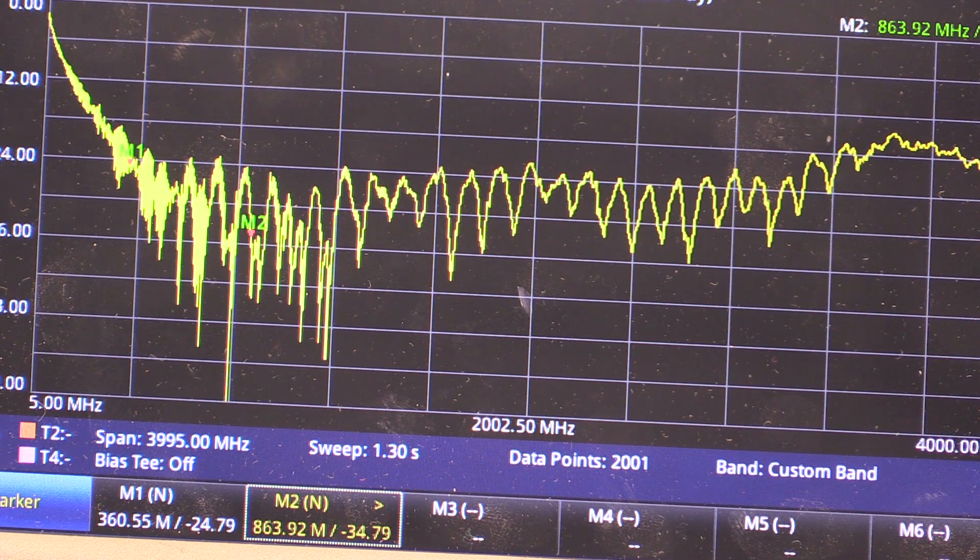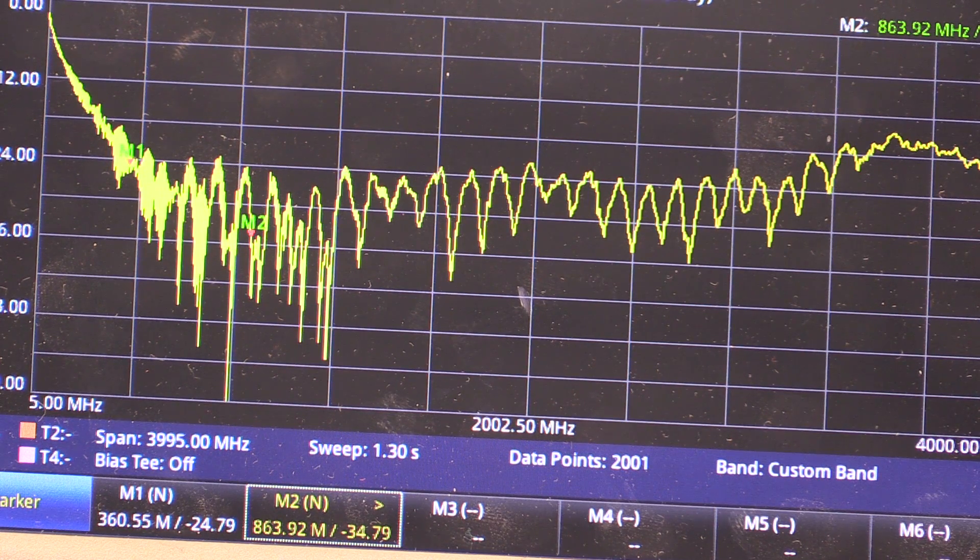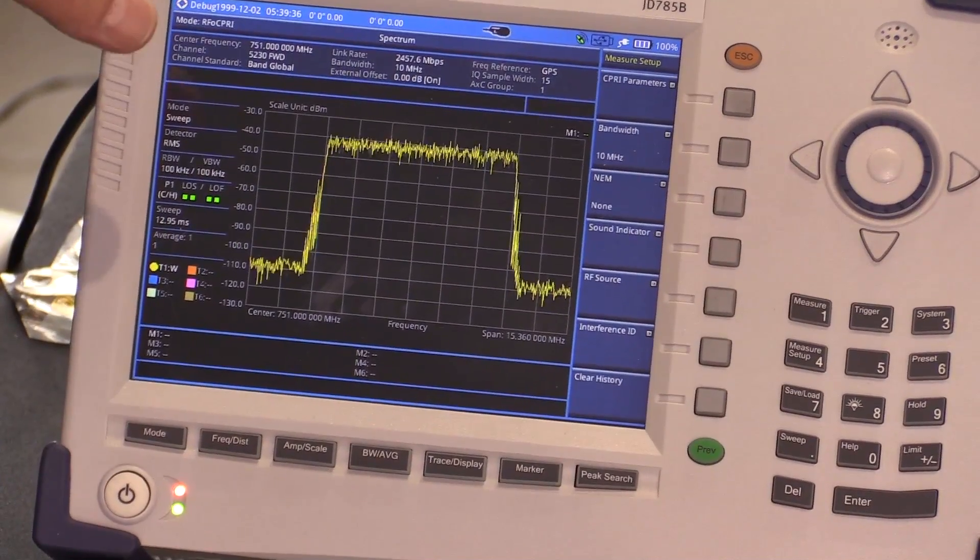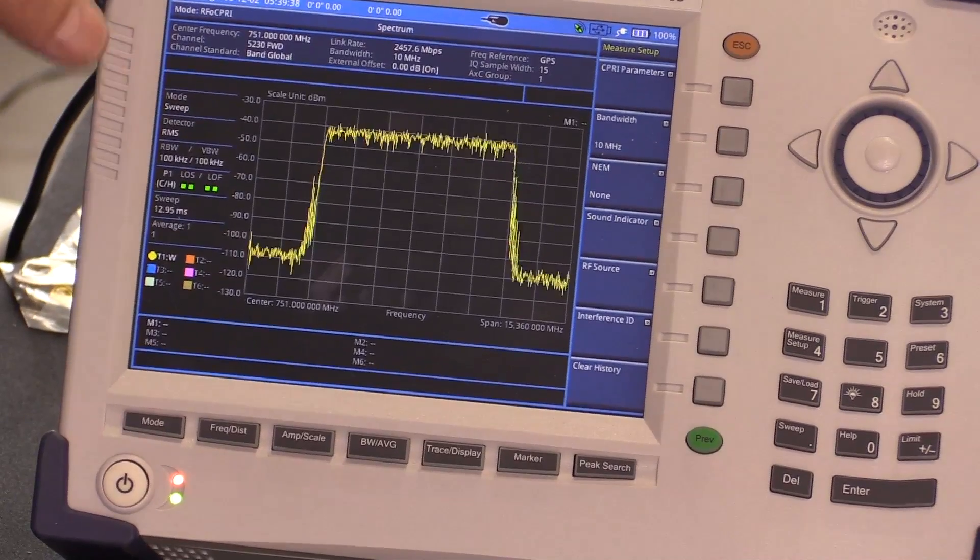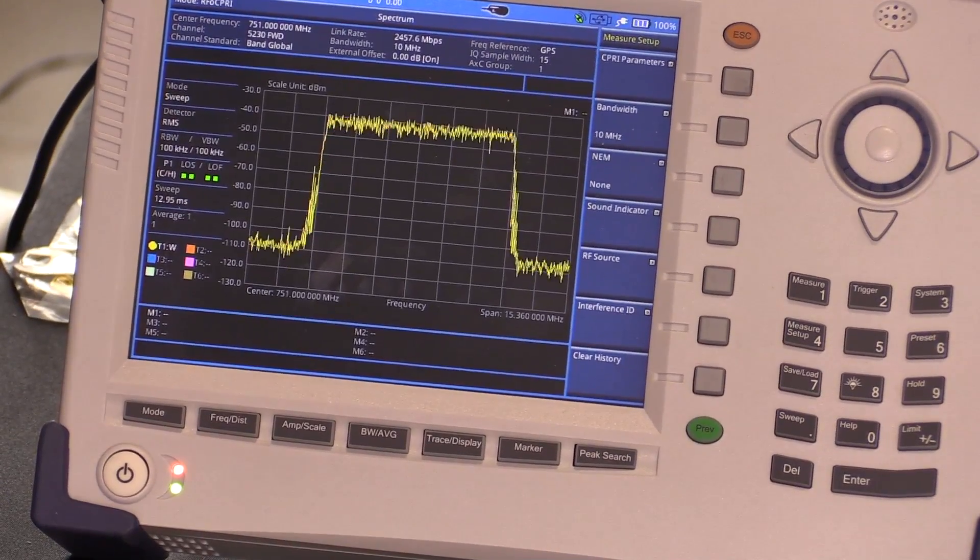The JDSU Cell Advisor product line consists of a series of base station analyzers and cable and antenna analyzers.